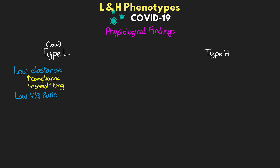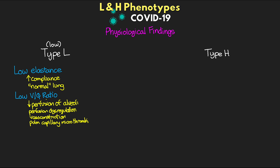Starting with the Type L phenotype — we can think of things here as being 'low.' These patients have low elastance, which is the reciprocal of compliance, meaning they have high — essentially normal — compliance, almost like a normal lung. They also have a low V/Q ratio, meaning low ventilation-to-perfusion ratio. There's a mismatch of perfusion; the alveoli aren't being adequately perfused, leading to hypoxemia related to perfusion dysregulation, hypoxic vasoconstriction, and pulmonary capillary microthrombi.